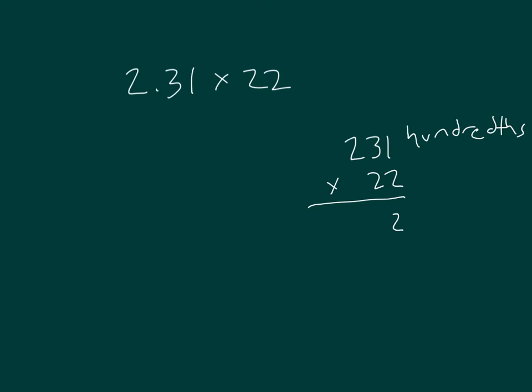And we're multiplying that by 22. 2 times 1 is 2, 2 times 3 is 6, and 2 times 2 is 4. Place a 0. For the other 2, 2 is worth 20. That's why we placed a 0. 2, 6, and 4.